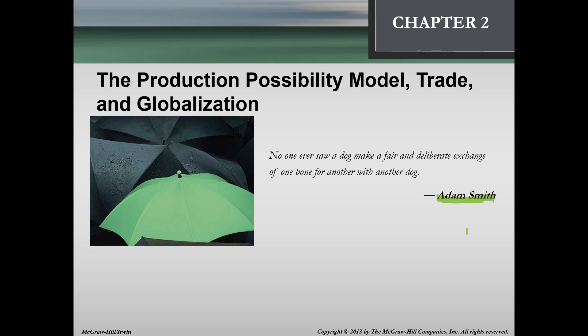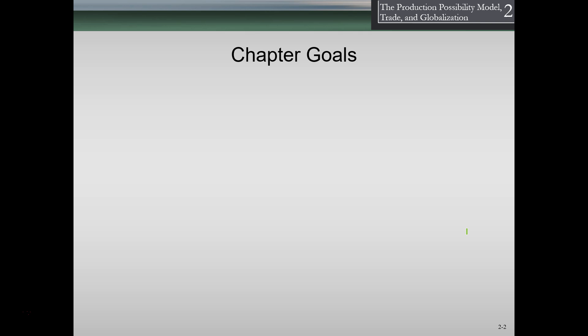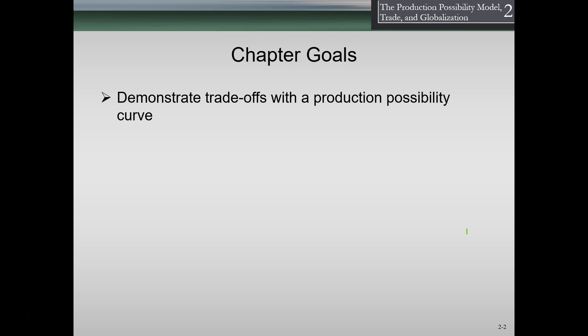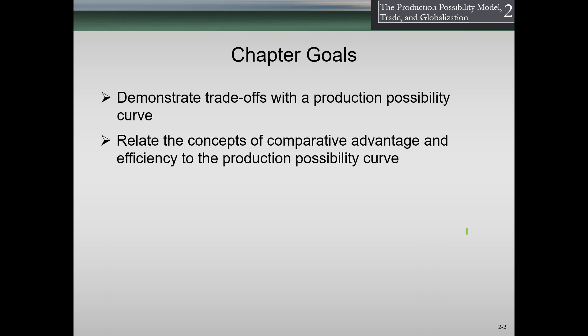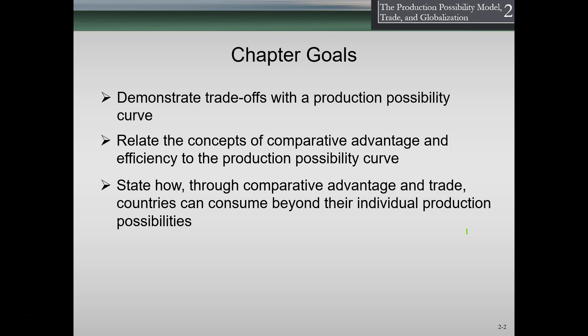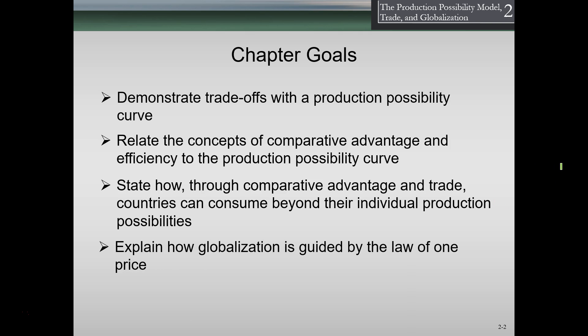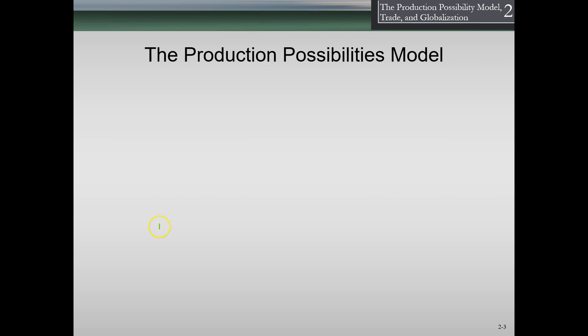The chapter goals are: to demonstrate trade-offs with a production possibility curve; to relate the concepts of comparative advantage and efficiency to the production possibility curve; to state how through comparative advantage and trade, countries can consume beyond their individual production possibilities; and to explain how globalization is guided by the law of price.